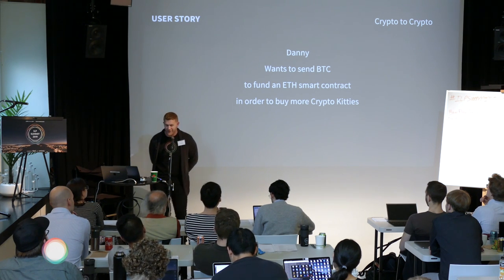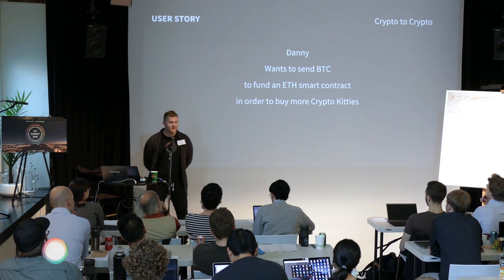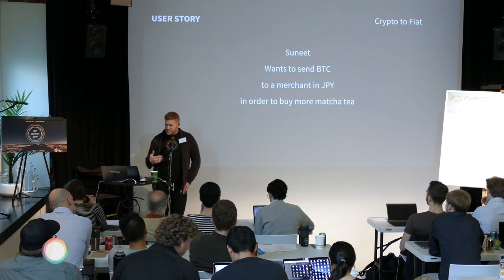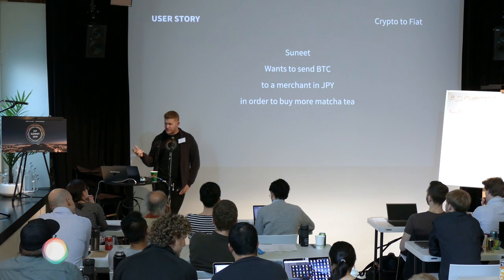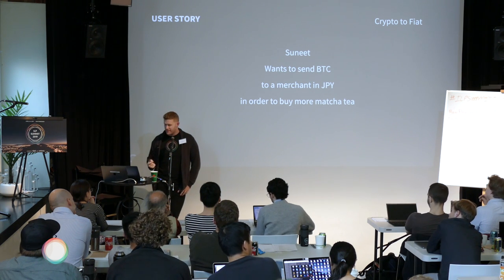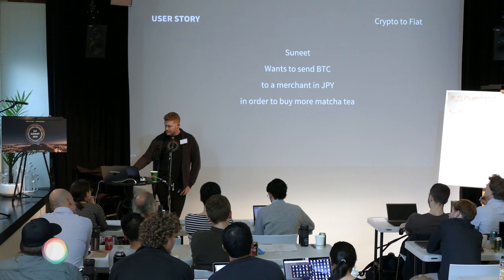In the same sense, Danny wants to send Bitcoin to fund an Ethereum smart contract in order to buy more CryptoKitties. In this case, you're funding one crypto to another system — you're doing that cross-chain transaction. I think this is a really solid sweet spot we can focus on in the coming months. In the crypto-to-fiat kind of case, Sunit wants to send Bitcoin to a merchant in JPY in order to buy more matcha tea. You're going from crypto to fiat and it's cross-border — a little complex, but that merchant wants to get paid in Japanese yen and Sunit insists on paying in Bitcoin. That's a friction point that ILP can really help solve eventually.